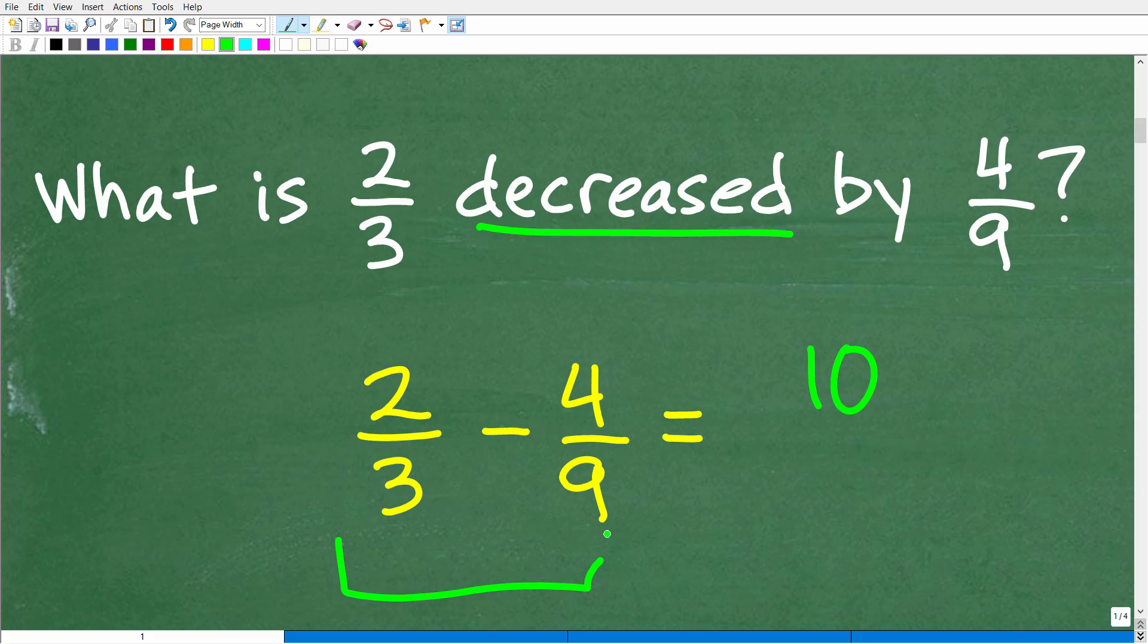Let's suppose we didn't understand this meant subtraction. So we can use some easier values. So what is 10 decreased by two? Well, 10 minus two.